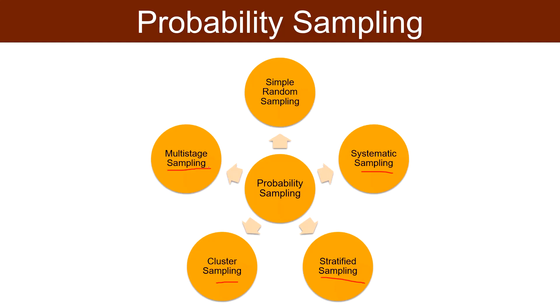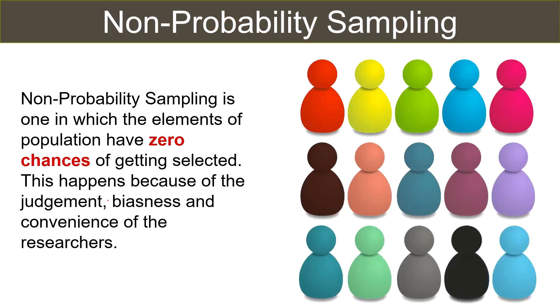Multistage sampling: the researcher selects large primary sampling units, then selects smaller units or subunits from the primary units, and then from the smaller units the sample is selected.